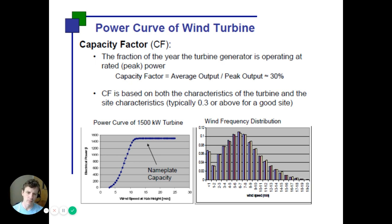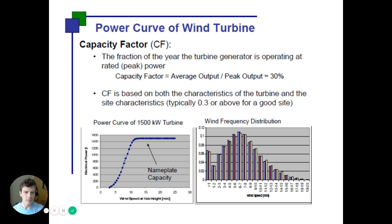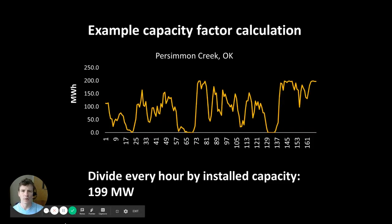Different wind speeds control how much electricity is produced by the wind turbine, and we experience different wind speeds throughout the year. We can think about the distribution of wind speeds throughout the year in a probabilistic sense — average wind speeds might be around 6 to 7 meters per second, but there's a lot of variability. Combining the power curve and the wind speed distribution gives you a theoretical sense of what the capacity factor is.